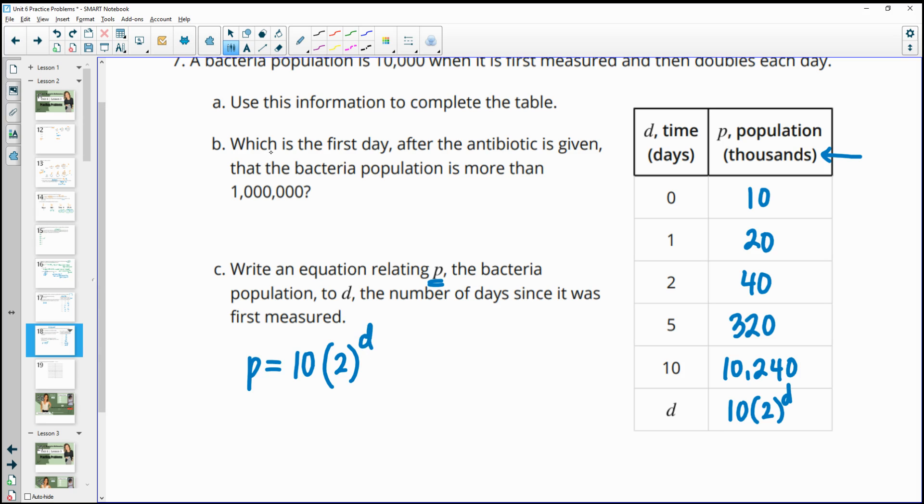Oh, and then I skipped to B. Which is the first day after the antibiotic is given that the population is more than 1 million? Now be careful. That's 1,000 thousands. So when is it more than this? And so we would want to look at a couple more of these. So at six, we would have been at 640,000. If I just start at five, multiply that by two. Then multiply this by two and we get 1,280,000, which is really 1.28 million. So this is day seven that that happened.